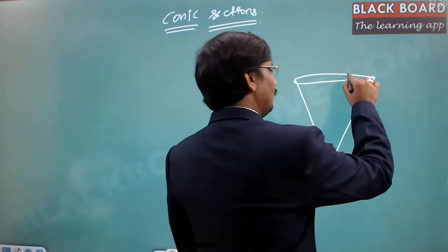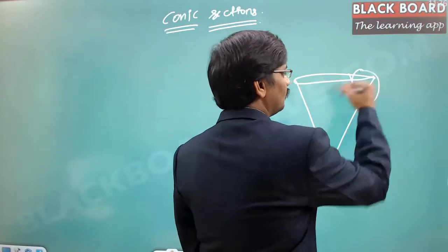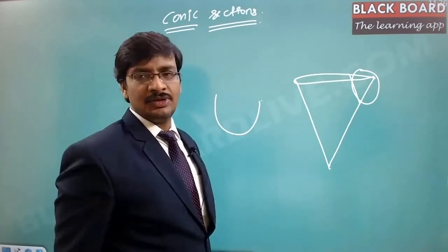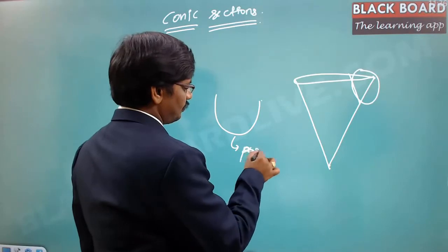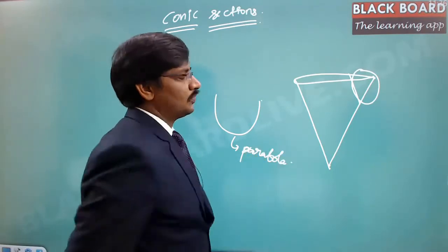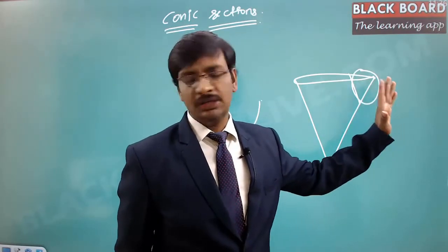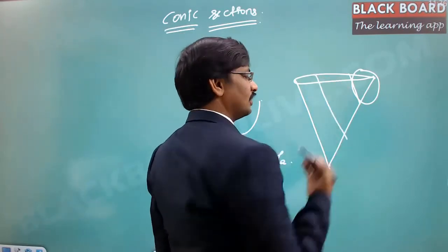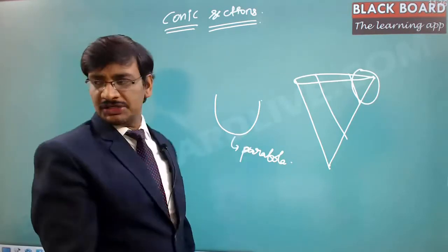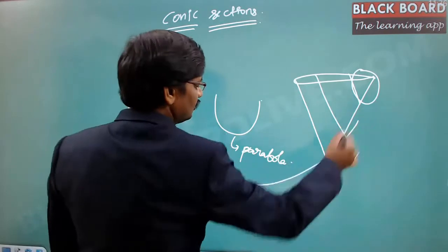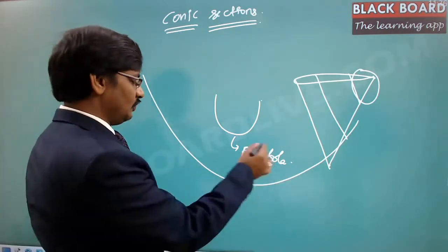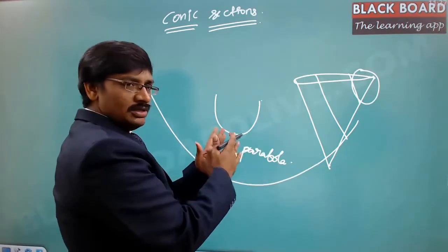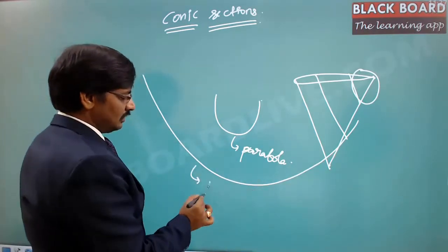If you cut like this and take this portion and expand it, it is going to form a shape called a parabola. If you cut at one corner and take this part out, it has that same shape. If you cut at a different location it is still that shape but in an expanded form — this expanded form is called the hyperbola.